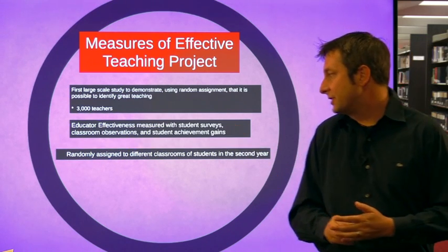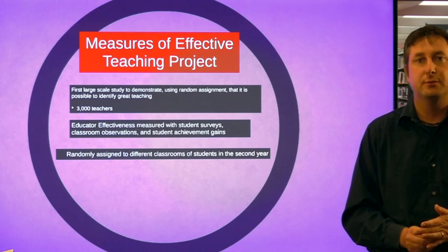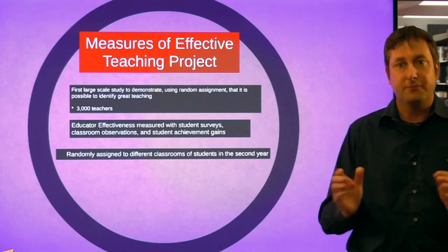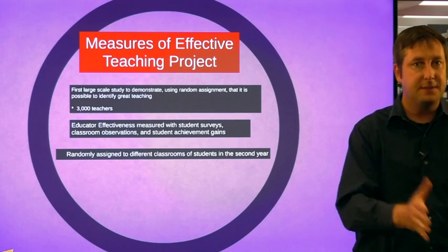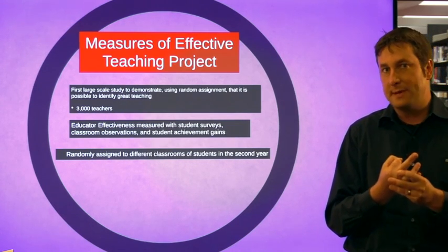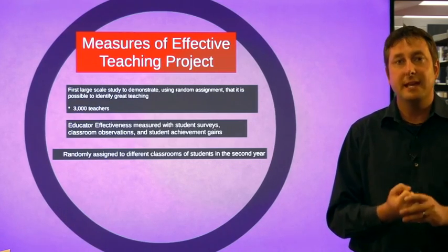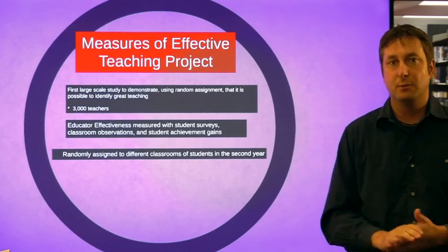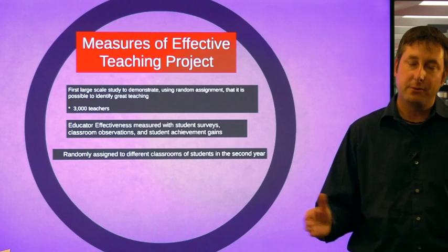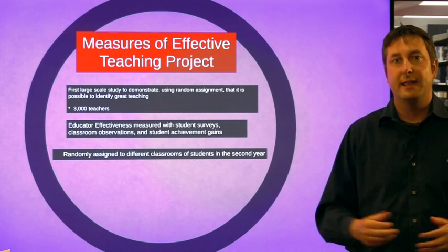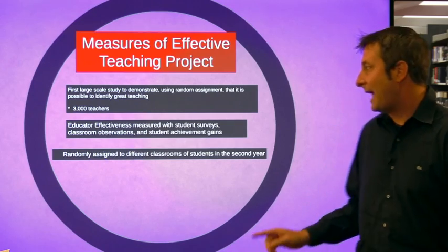These 3,000 teachers were randomly assigned to different classrooms within the second year. In the first year, teachers had their students, taught them, and then had those three measures of educator effectiveness. Then the teachers were randomly assigned to a random group of students, taught through the year, and at the end had the same three measures.